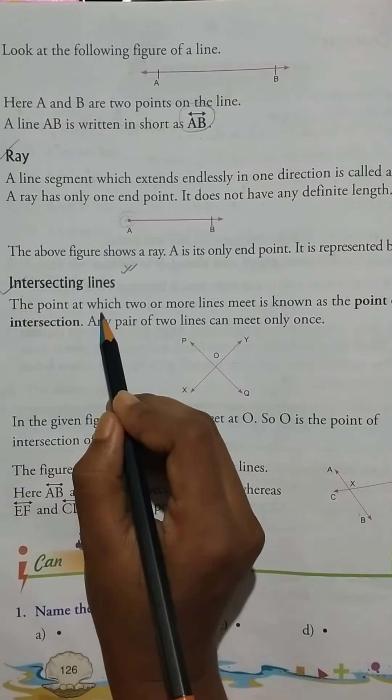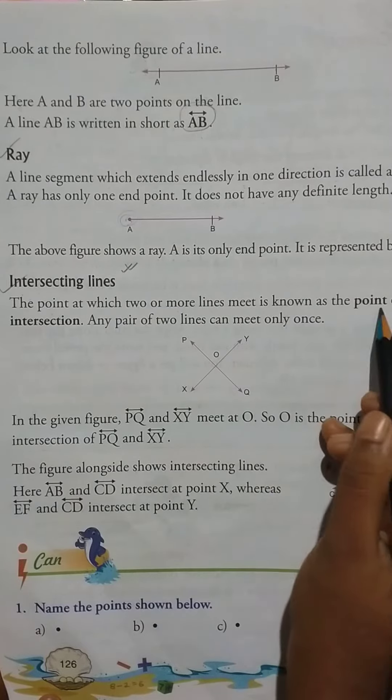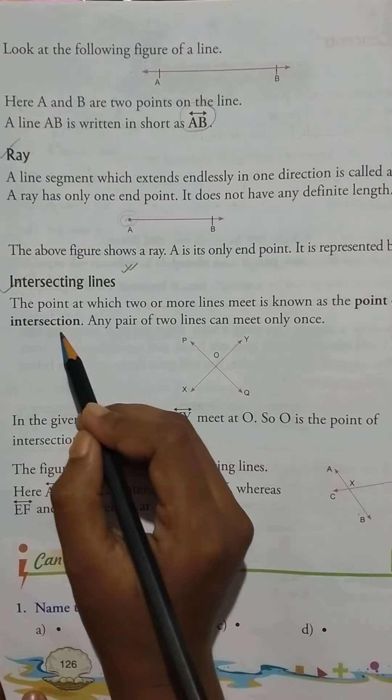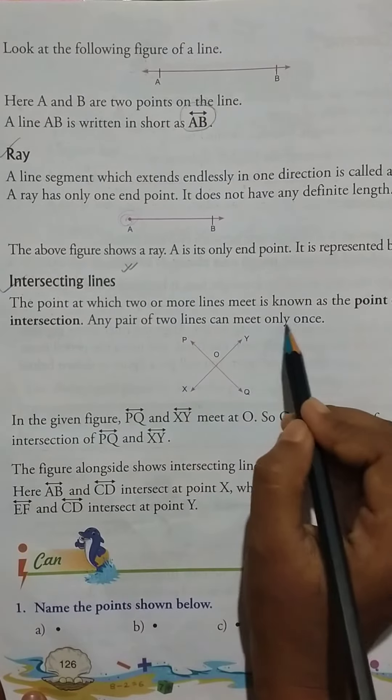The point at which two or more lines meet is known as the point of intersection. Any pair of two lines can meet only once.